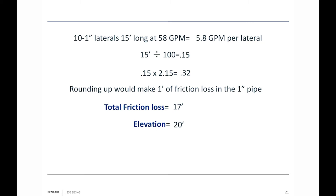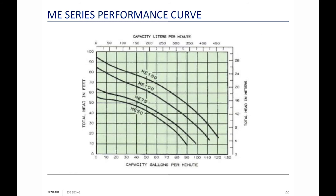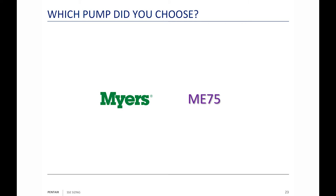Our elevation difference is 20 feet, the required squirt is 4 feet, and total friction loss is 17 feet (16 in two-inch + 1 in one-inch pipe). Adding those together: 58 gallons per minute at 41 feet of head — that's what we're looking for in a pump. Looking at the ME series performance curves, 58 GPM at 41 feet of head falls right on the ME75 line, so we choose the Myers ME75 for this job.